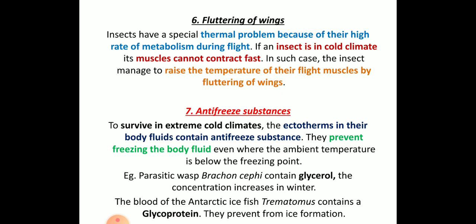Antifreeze substances: some animals live in extreme cold conditions, and for their survival they have antifreeze substances like glycerol and glycoproteins, which are present in parasites and different types of fishes in the Antarctic region. These ectotherms have antifreeze substances in their body fluids to prevent freezing of their blood and different organs.